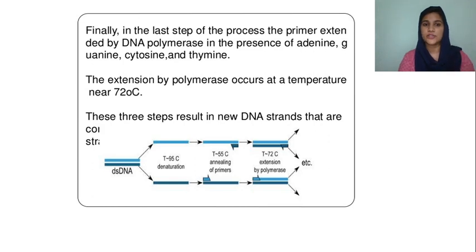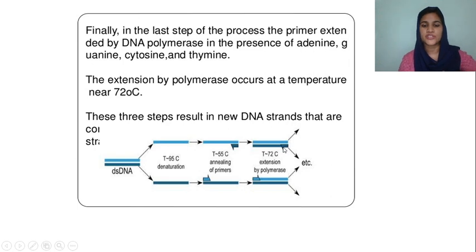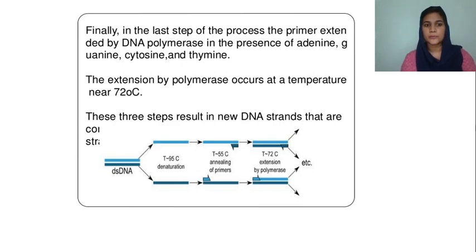The third process is extension, where primers are extended using the bases adenine, guanine, cytosine, and thymine. Extension occurs at 72 degrees Celsius. You can see in the picture: double strand DNA becomes single strand at 95°C denaturation; then at 55°C the oligonucleotide primers anneal; then at 72°C extension builds the new DNA strand.